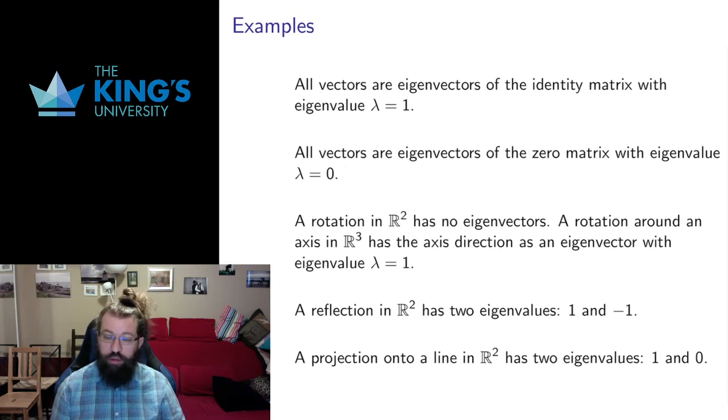Similarly, if we take the zero matrix, the zero matrix sends everything to the origin. That means that any vector just gets multiplied by 0, because multiplying a vector by 0 makes that vector the zero vector. So all vectors are eigenvectors of the zero matrix. There's only one eigenvalue, which is 0.